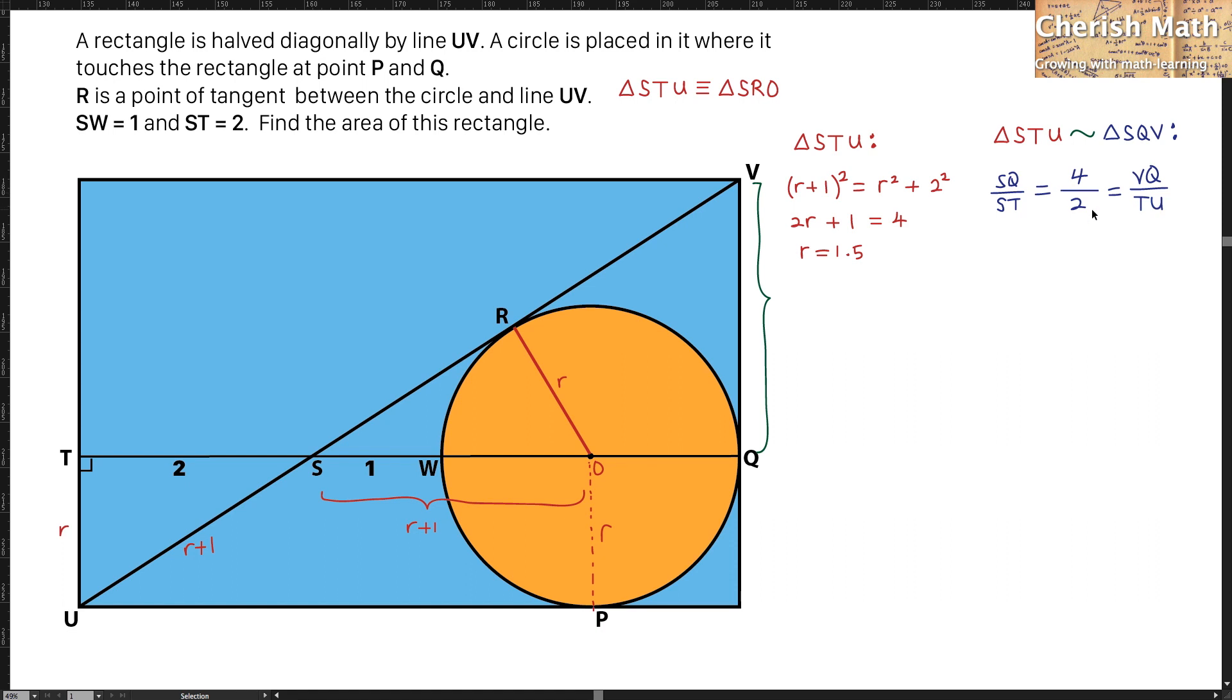When 4 divided by 2, the answer is 2. VQ is the value to be found, and TU is the value of r, which is 1.5 that we got earlier. So, I'm going to divide by 1.5 for the value TU. The value of VQ that I'm going to get here is 3 units.